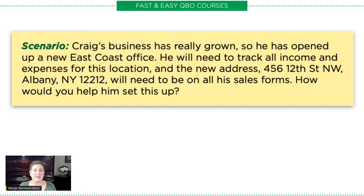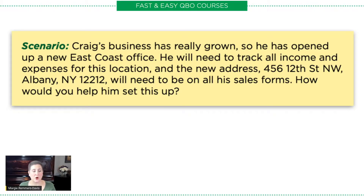Craig's business has really grown, so he has opened up a new East Coast office. He will need to track all income and expenses for this location. The new address — 456 12th Street Northwest, Albany, New York, 12212 — will need to be on all his sales forms. How would you help him set this up?